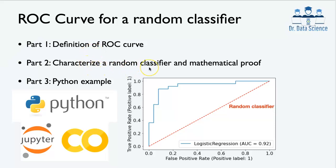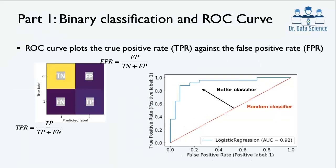Then we are going to characterize the behavior of a random classifier and present a mathematical proof that shows the behavior of the ROC curve for a random classifier. Third, we're going to look at a very quick Python example that shows you that using only a single line of code you can plot such ROC curves. We'll also have a link to the Google Colab so that you can access the code. Please don't forget to look at the description below and feel free to like and subscribe.